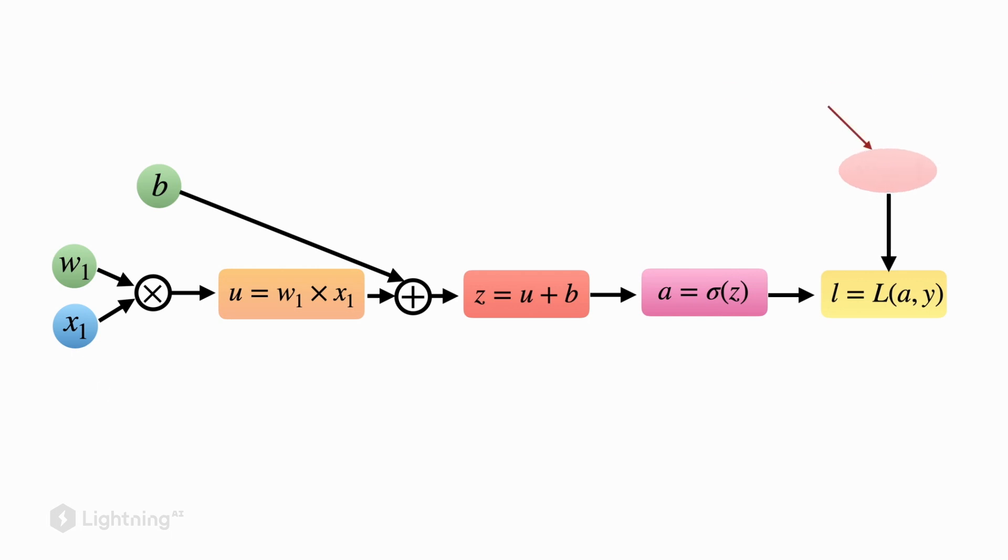Now let's assume our given class label is class label 1. That's the class label that corresponds to the current training example. And the activation function, as you recall, represents the class membership probability for class label 1. And in this case, just assume that this activation function outputs 0.1.